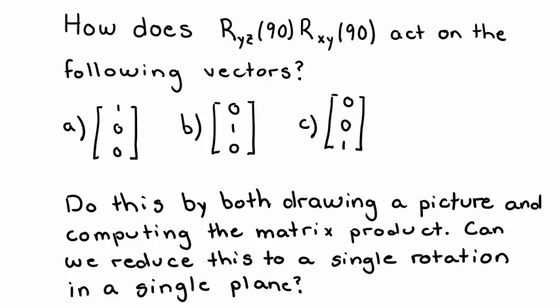What I want you to do now is tell me how a rotation — first in the xy plane by 90 degrees, and second in the yz plane by 90 degrees — acts on the following three vectors: first, a vector pointing entirely in x; second, a vector pointing entirely in y; and third, a vector pointing entirely in z. For each of these three vectors, I want you to find the result two ways: first by drawing a picture, and second by performing matrix multiplication.